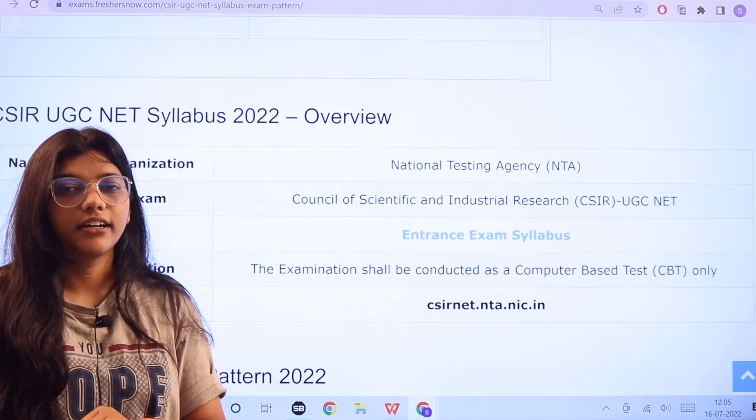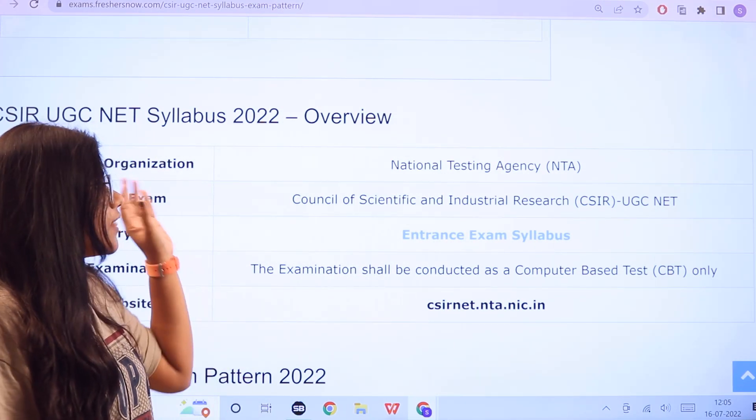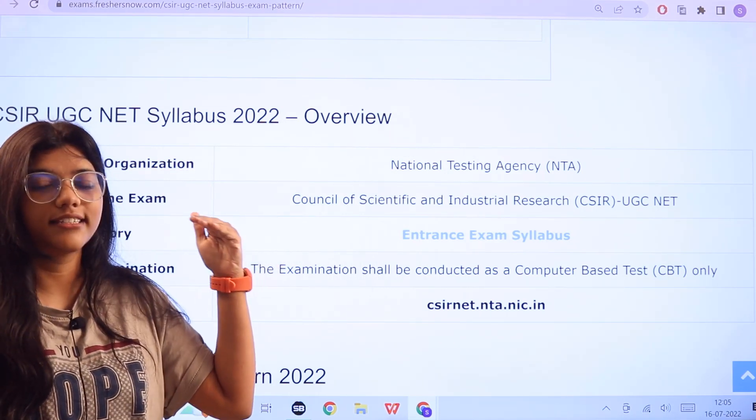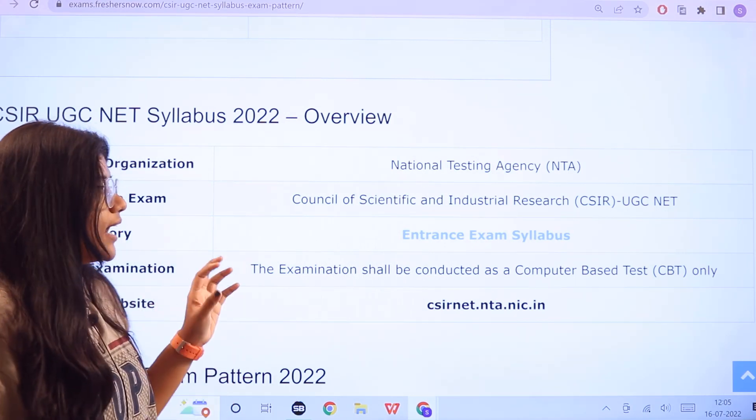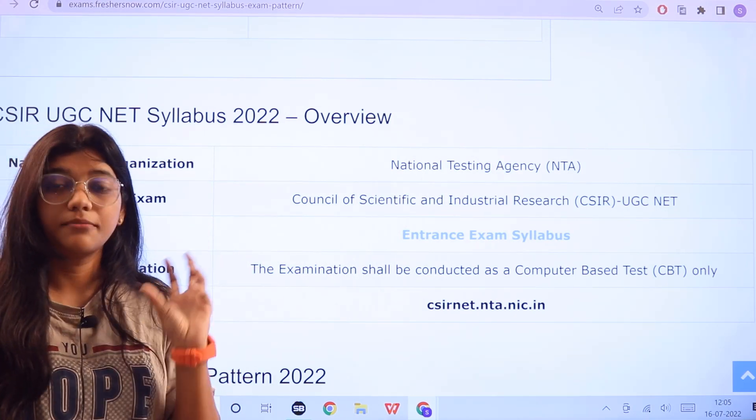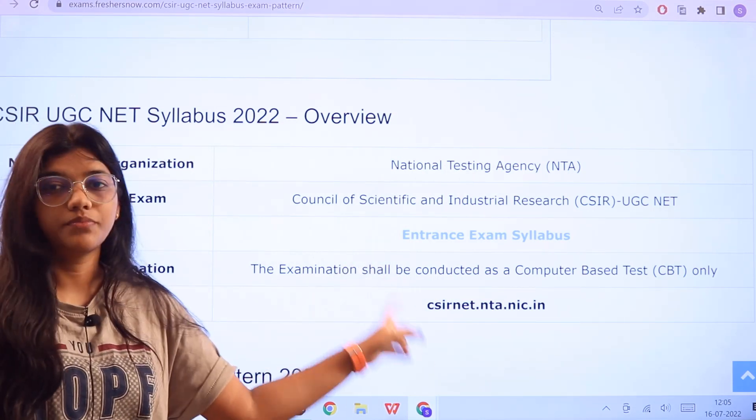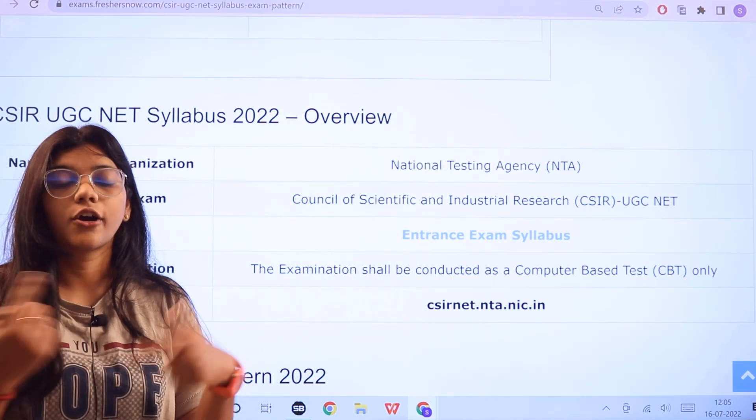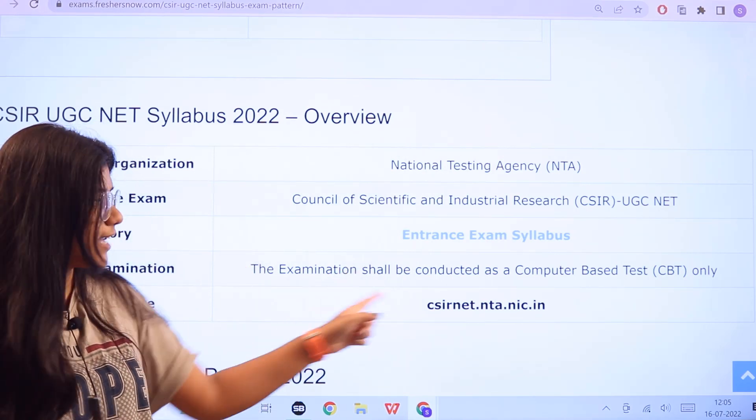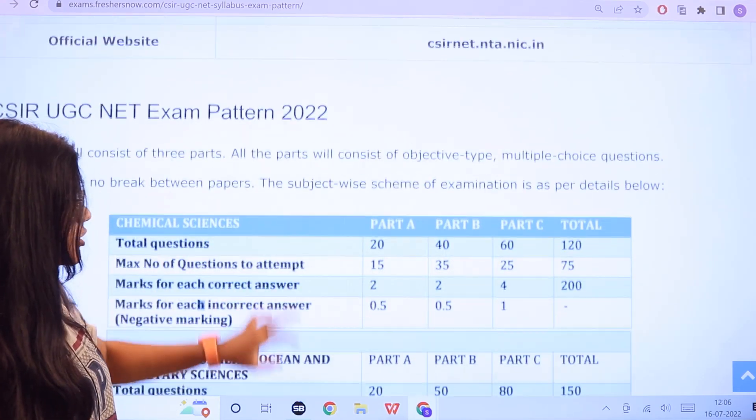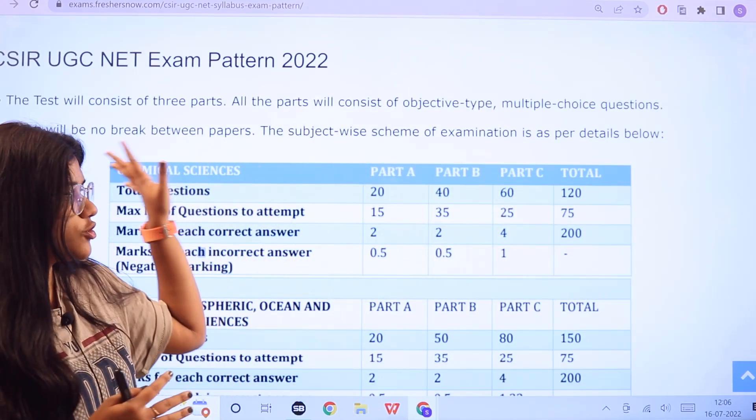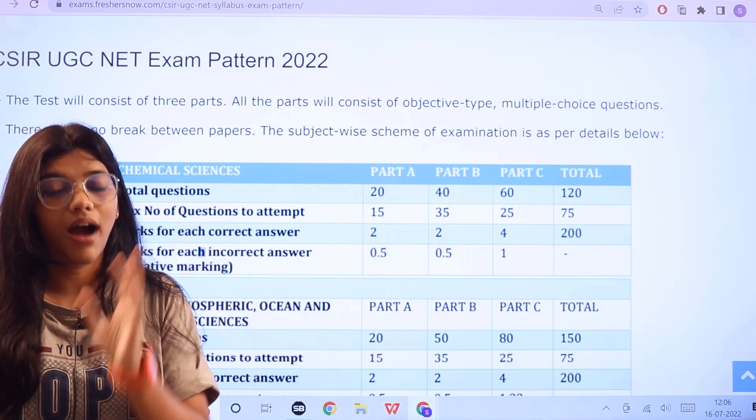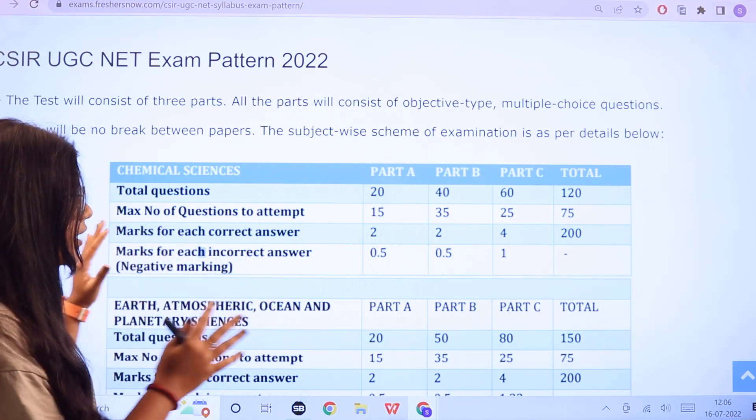This examination is conducted by National Testing Agency and this is from Council of Scientific and Industrial Research. So we also consider it as CSIR UGC NET examination and this would be on computer-based multiple choice questions. Here is the official website access in case you want to cross check any information. The examination pattern sectional wise is presented to you in a clear table format with parts, paper, and marking scheme criteria as well.